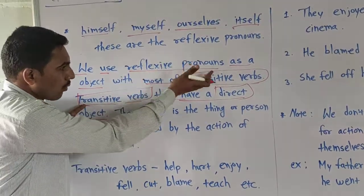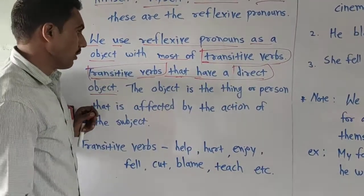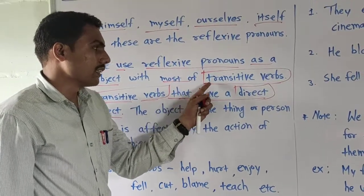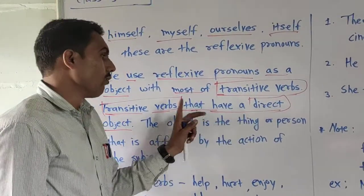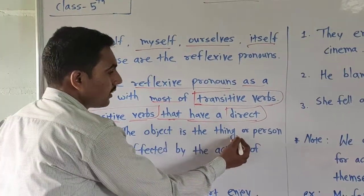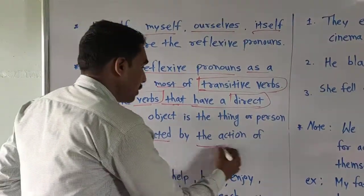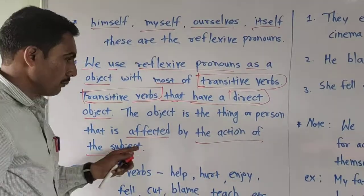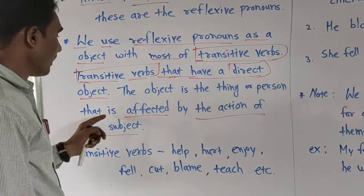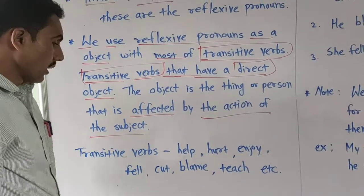The reflexive pronouns are mostly used with transitive verbs. The object is the thing or person that is affected by the action of the subject.